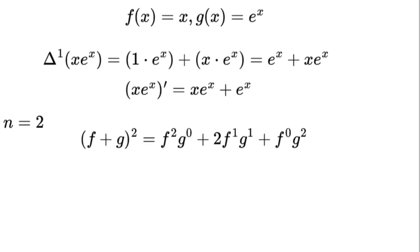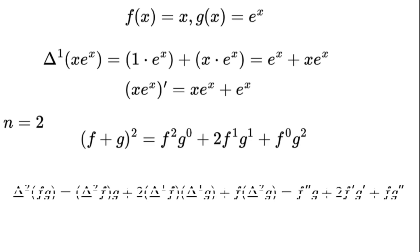Map these to operators: delta to the power of 2 times (f times g) equals delta to the power of 2 times f times g plus 2 times delta to the power of 1 times f times delta to the power of 1 times g plus f times delta to the power of 2 times g, which equals f double prime times g plus 2 times f prime times g prime plus f times g double prime.